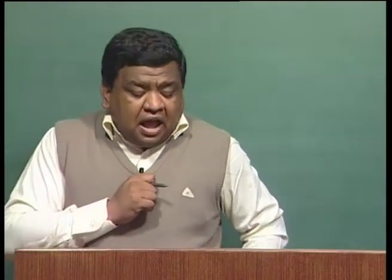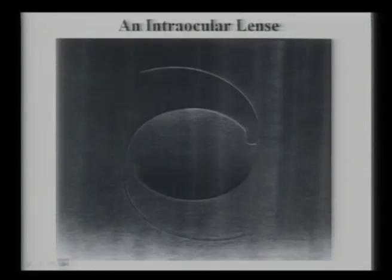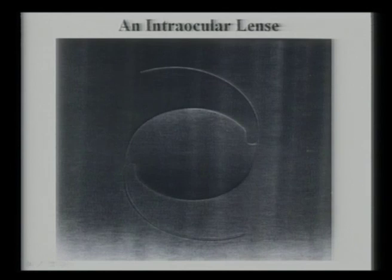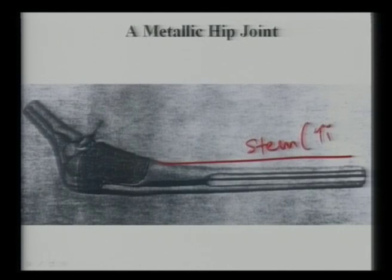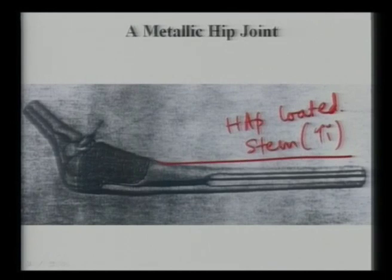An example of an intraocular lens material is polymethyl methacrylate and silicone rubber. Now, the stem of a hip implant — typically made of titanium, and also available as hydroxyapatite-coated titanium — is the load-bearing structural part of the total hip joint.